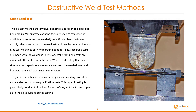The guide bend test involves bending a specimen to a specified bend radius. Various types of bend testing are used to evaluate the ductility and soundness of welded joints. Guided bend tests are usually taken transverse to the weld axis and may be bent in plunger type test machines or in wrap-around bend test jigs. Face bend tests are made with the weld face in tension, while root bend tests are made with the weld root in tension. When bend testing thick plates, side bend test specimens are usually cut from the welded joint and bent with the weld cross section in tension. The guided bend test is most commonly used in welding procedure and weld performance qualification tests, and is particularly good at finding linear fusion defects which will often open up in the plate surface during testing.